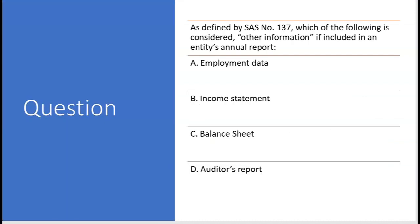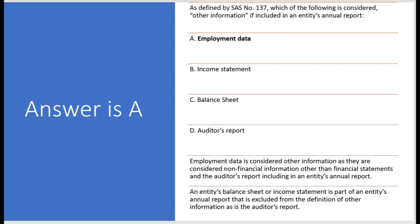As defined by SAS 137, which of the following is considered other information if included in an entity's annual report? D — the auditor's report: no. C and B are financial statements. If it's already in the financial statements or it's the auditor's report itself, then it's not other information. So it has to be A — employment data. A is the correct answer.